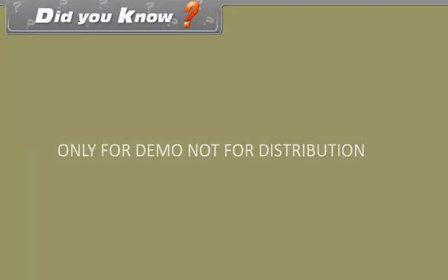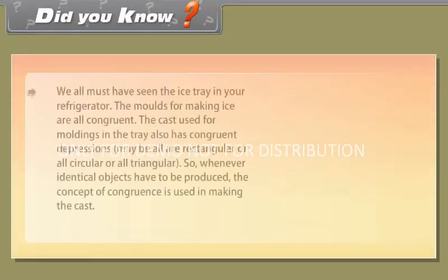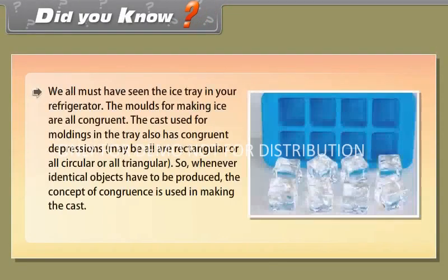Did you know? We all must have seen the ice tray in your refrigerator. Observe that the moulds for making ice are all congruent. The cast used for moulding in the tray also has congruent depressions — maybe all rectangular, all circular, or all triangular. So, whenever identical objects have to be produced, the concept of congruence is used in making the cast.